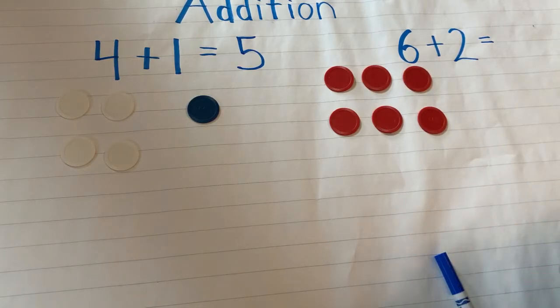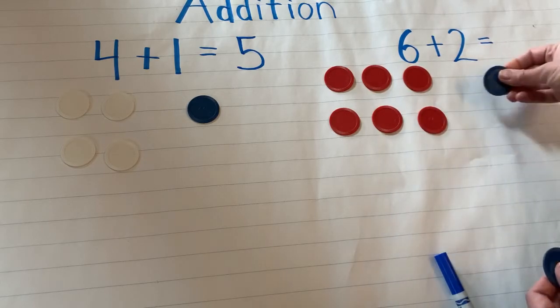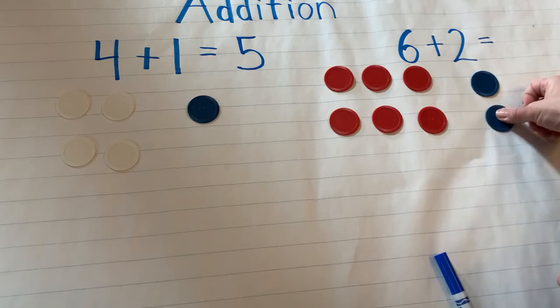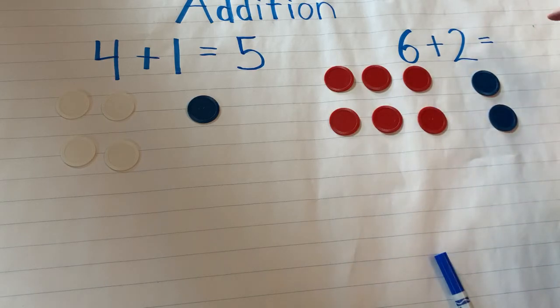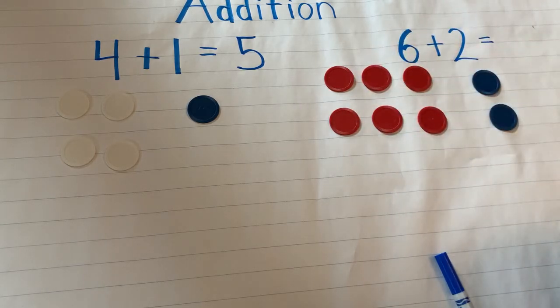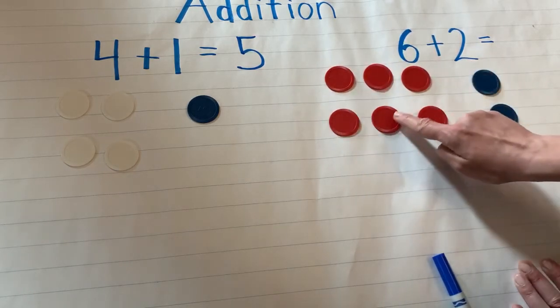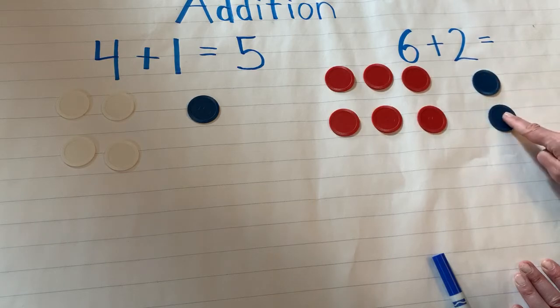Two. That's right. One, two. So my sum, my amount, my total is all of the tokens together. Let's find out what it is. One, two, three, four, five, six, seven, eight.